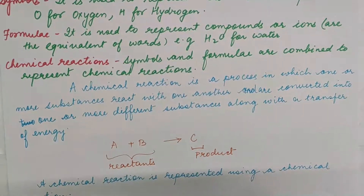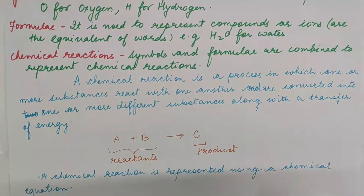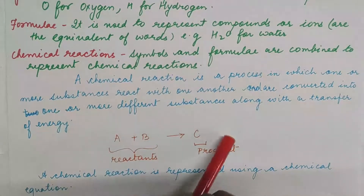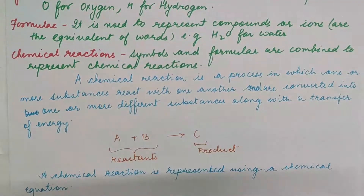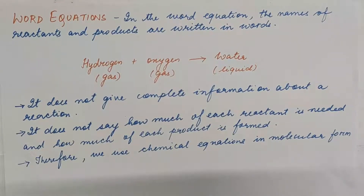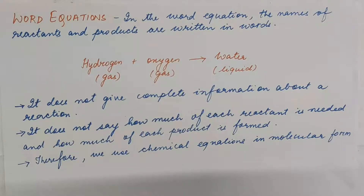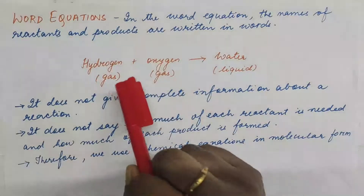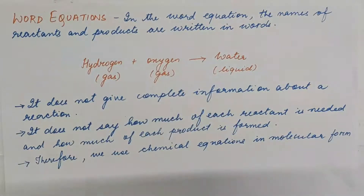A chemical reaction is represented using a chemical equation. In chemistry, we have word equations. A word equation is a word form of an equation where the reactants and products are all written in terms of words.